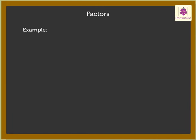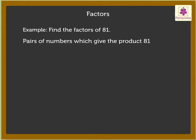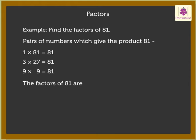Let us solve one more example. Find the factors of 81. The pairs of numbers which give the product 81 are 1 into 81 is equal to 81, 3 into 27 is equal to 81, 9 into 9 is equal to 81. Thus, the factors of 81 are 1, 3, 9, 27, and 81 as each of these numbers divides 81 exactly. Did you notice we counted the repeated factor only once?